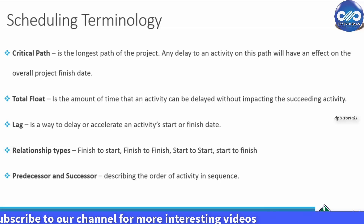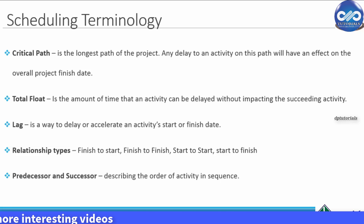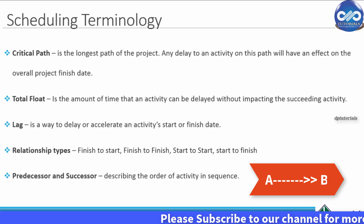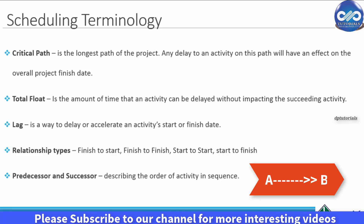Predecessor and Successor: This describes the order of an activity in a sequence. For example, there are activities A and B. If B is followed by A's completion, then B is called the successor of activity A, and A will be called the predecessor of activity B.